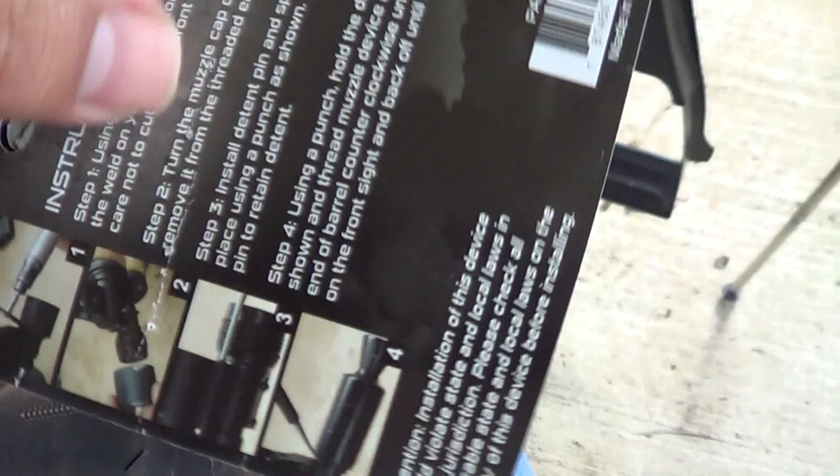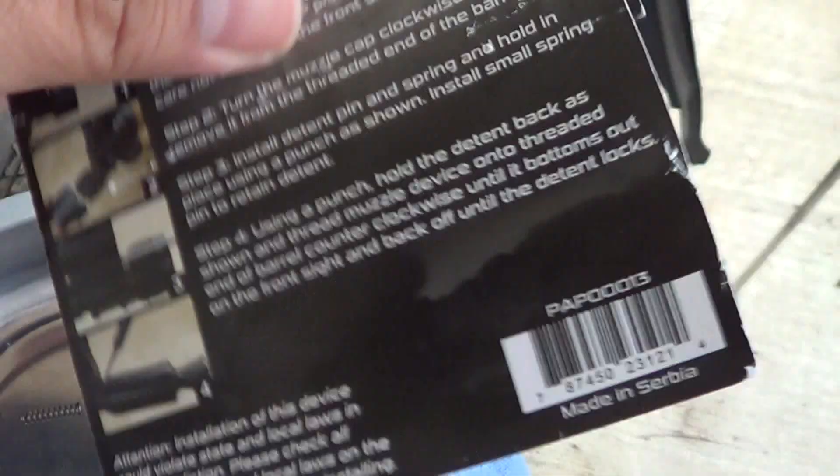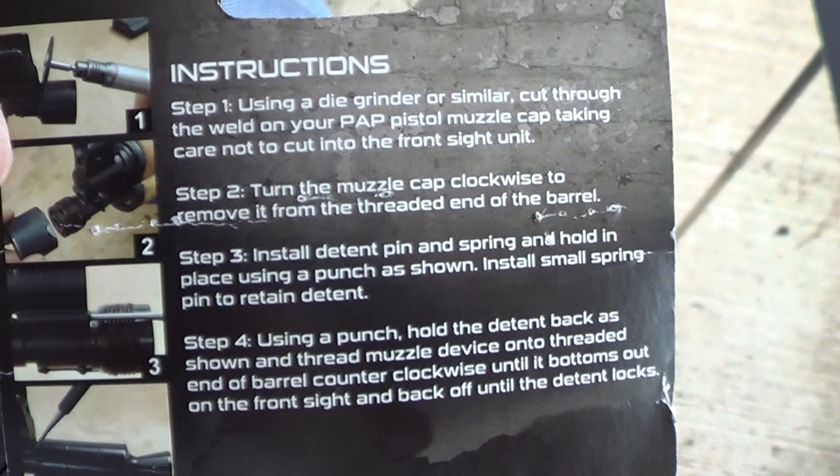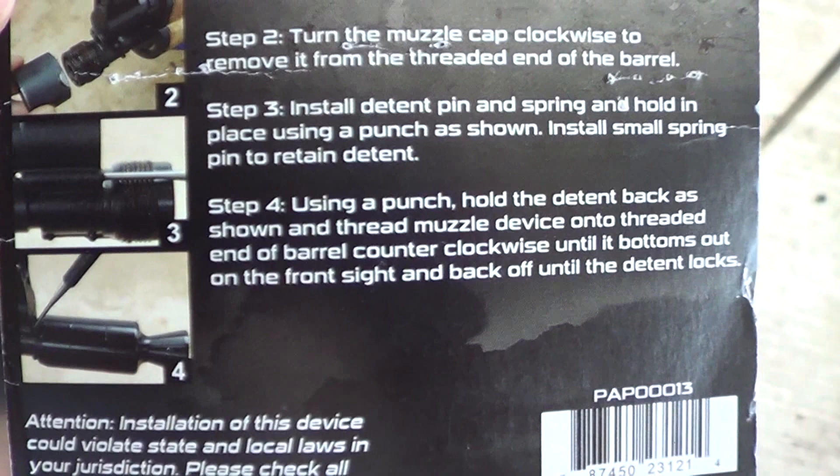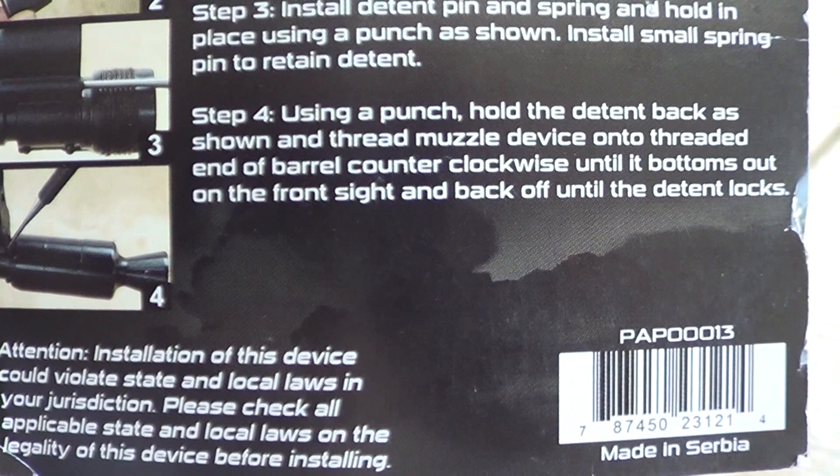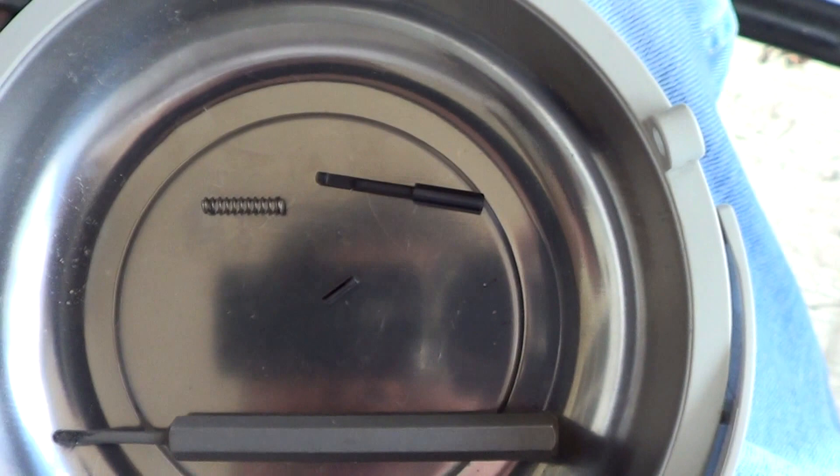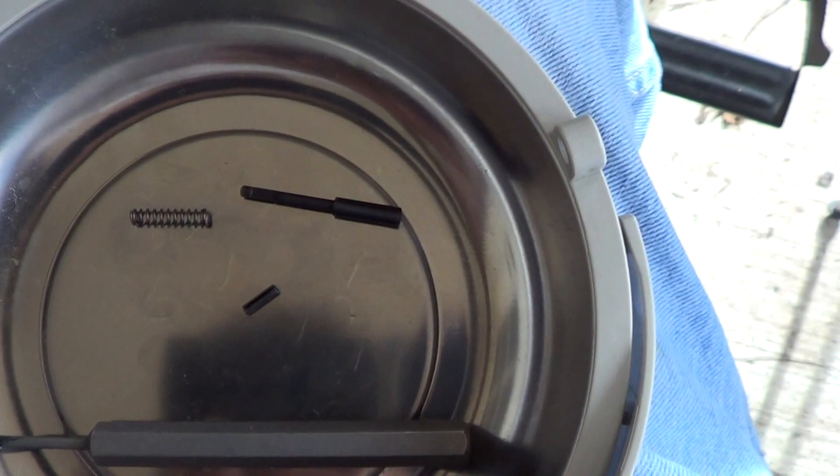Right here, I bought it from cheaperthandirt.com - it was cheaper than Amazon and other places I looked. Plus it came with the tools here and the instructions. Step one and two is just taking off the original brake, and now I'm on step three to four. It even comes with the parts. Everywhere else you had to buy the spring and detent and the pin separate.